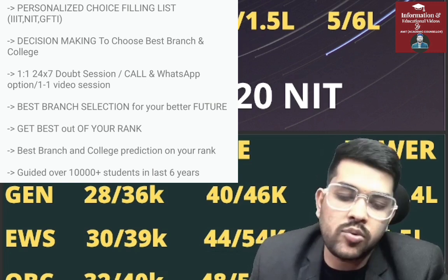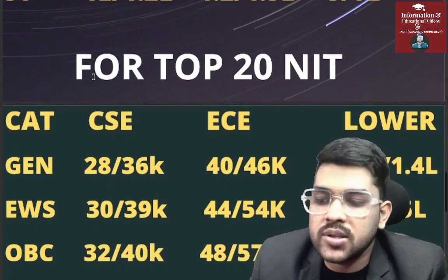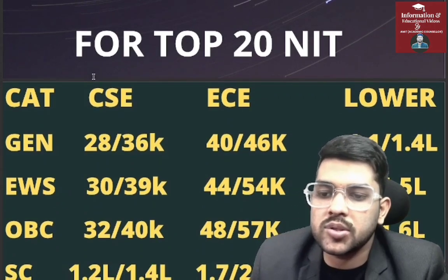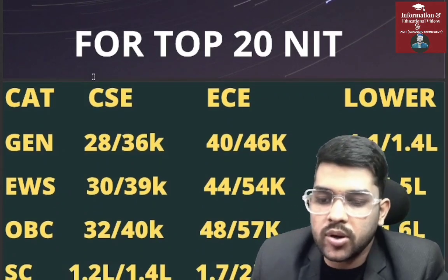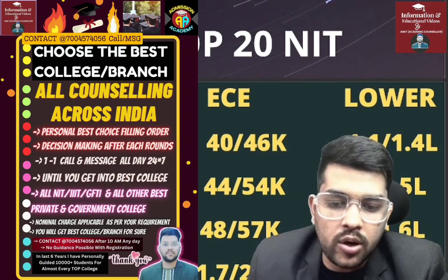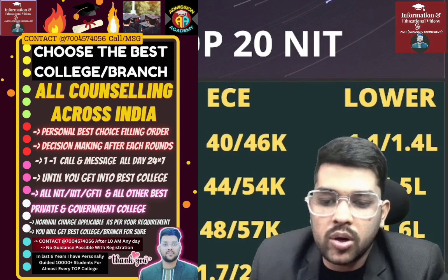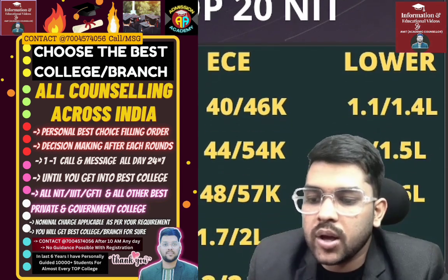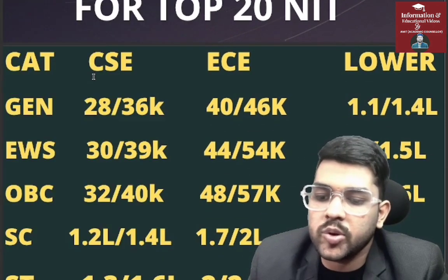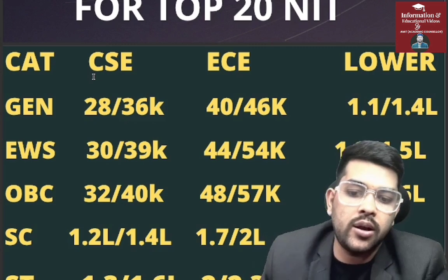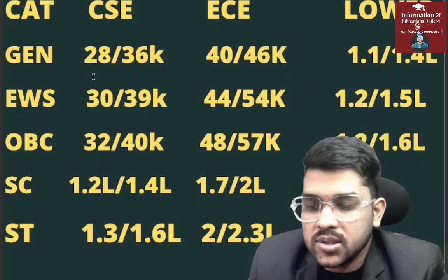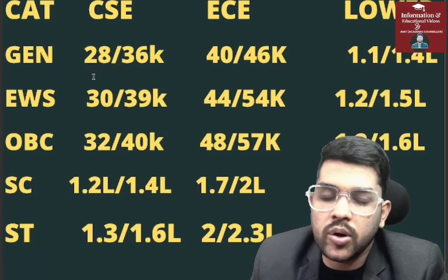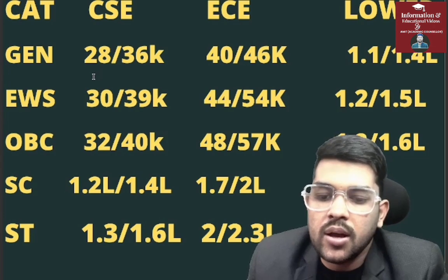OBC: 32,000 to 40,000 for CSC/EC, 48,000 to 57,000, lower 1.2 to 1.6 lakh. SC: 1.2 lakh to 1.4 lakh for CSC/EC, 1.72 lakh lower, 4 to 5 lakh. ST: 1.3 to 1.6 lakh for CSC/EC, 2.2 to 2.3 lakh lower, 6 to 7 lakh.